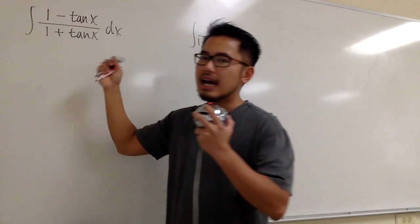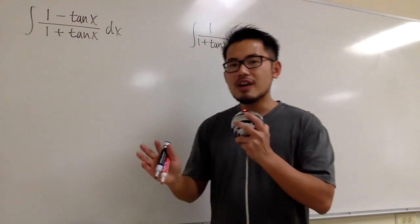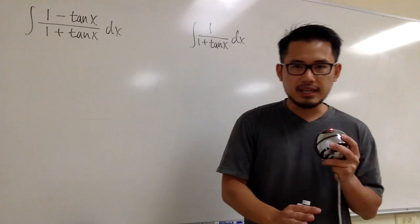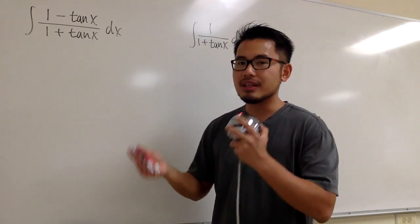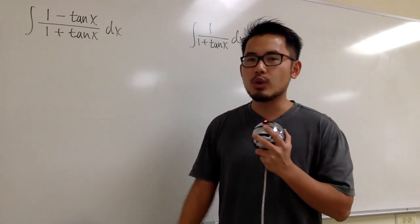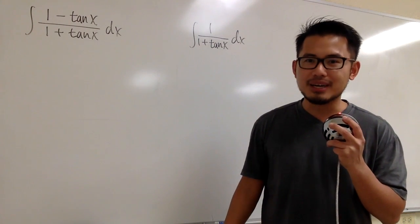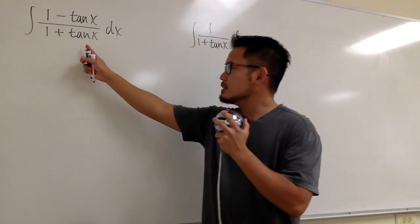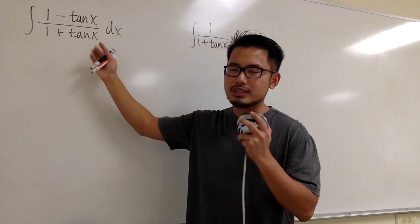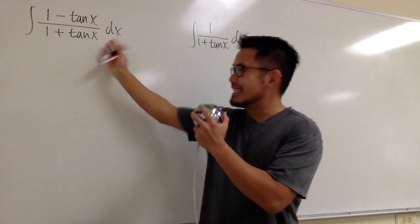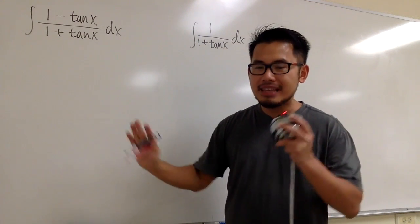As you can see, for this integral, it has tangent x, right? However, we don't just like to have tangent x, because we also want to have secant x, or maybe secant squared x to help us out once in a while. However, I don't think we can come up with secant x or secant squared x easily in this case. So let me not do that.